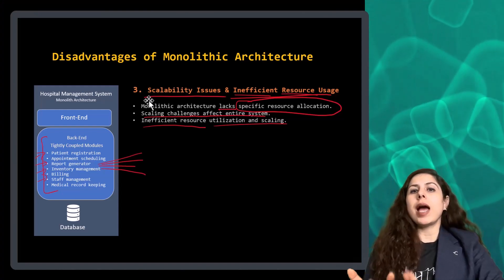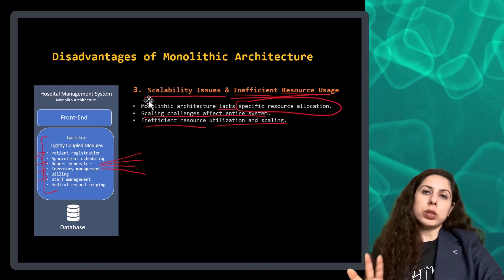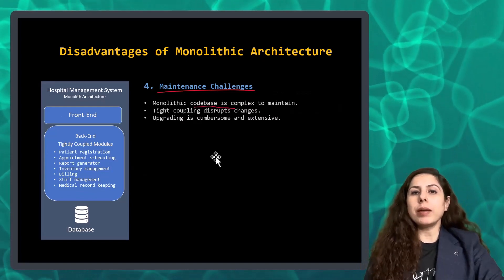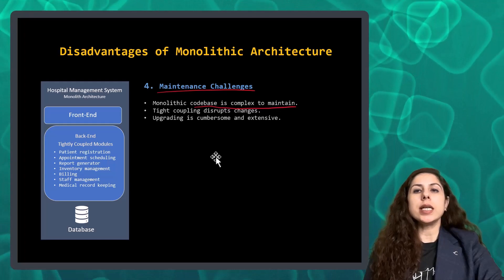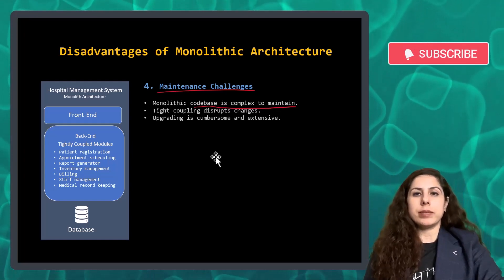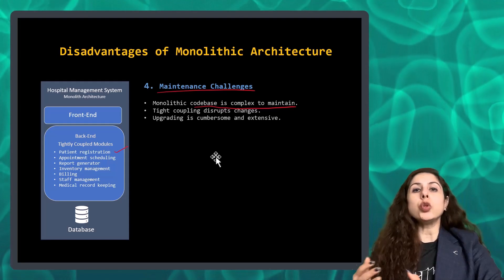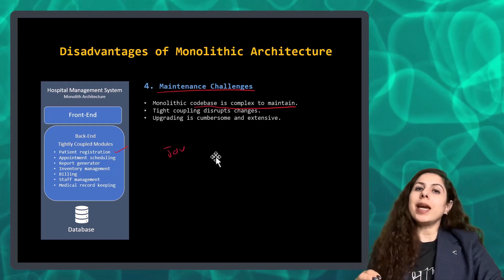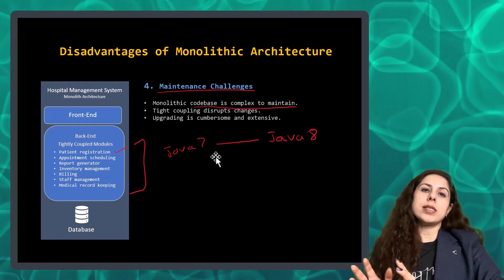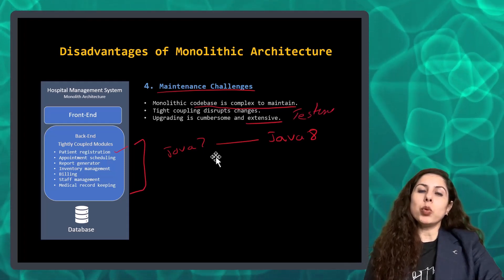Fourth, maintenance challenges over time. Monolithic application code can become complex and interconnected, making it difficult for new developers to understand and maintain. Changes in one part can affect others. For example, if a developer wants to use a new Java feature, they cannot just update their module — they must upgrade the entire app, requiring extensive testing and effort.